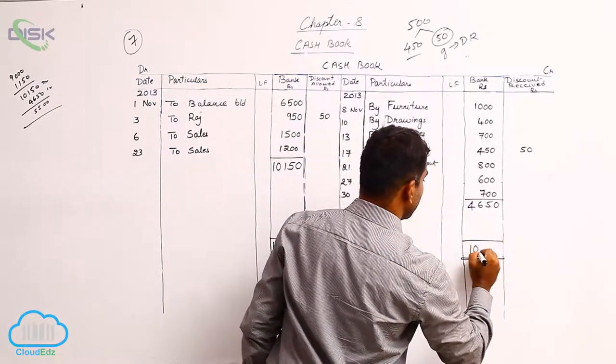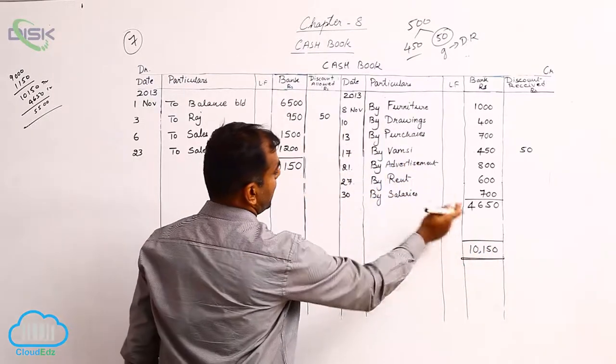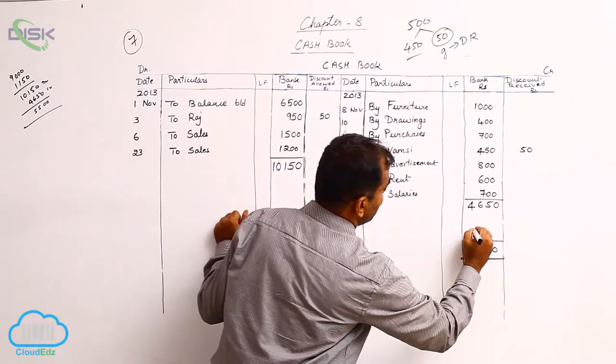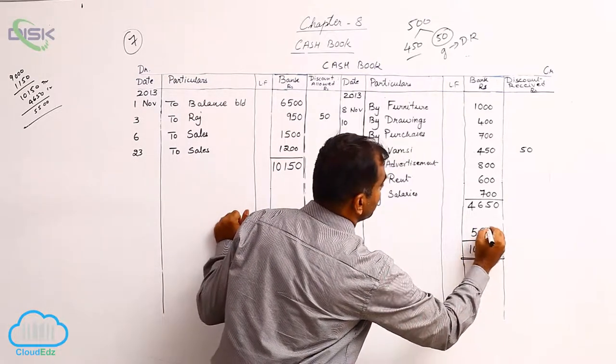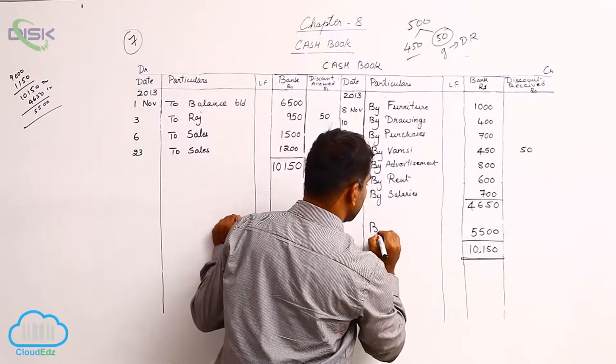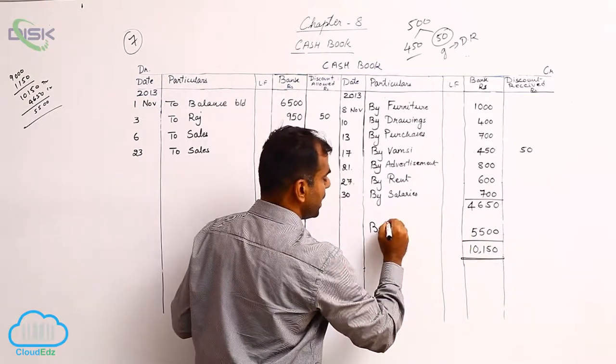So 10,150, from 10,150 if I remove 4,650 I will be getting my balance as 5,500 which is my closing balance in the bank, means my money in the bank is now 5,500.